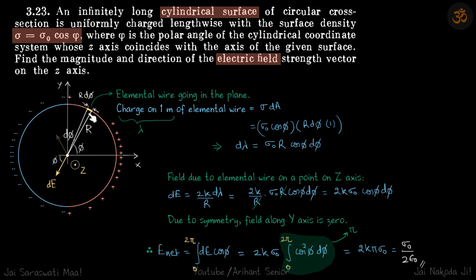Now let's get the value of it. We will take an elemental wire here. This is a cylinder which is going inside and outside the plane. If you take an element like this that element is a long wire, an elemental wire going in the plane.